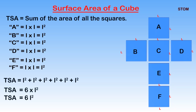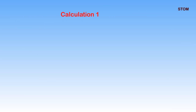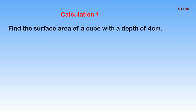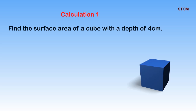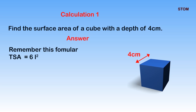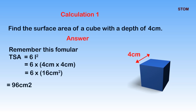Let us take a look at this example, where we are required to find the surface area of a cube with depth 4 cm. The first thing to do is to calculate the area of our square, which is L squared. This will be 4 multiplied by 4, giving us 16. Therefore, the surface area of the cube will be 6 multiplied by 16, which gives us 96 cm squared.